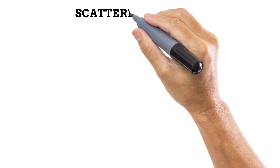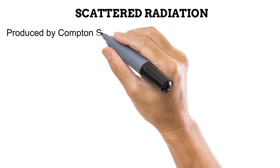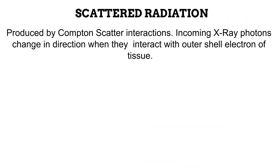In the third video of this series, we learned that scattered X-ray photons are produced during Compton scatter interactions, in which X-ray photons change in direction when they interact with the atomic outer shell electron of tissues. We also pointed out that these occur commonly in high kilovoltage and thick anatomical parts. As for the effects, we pointed out that scattered photons will either make it to the image receptor or go to be absorbed by another body tissue.